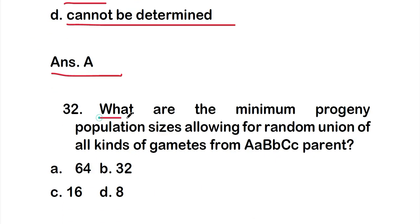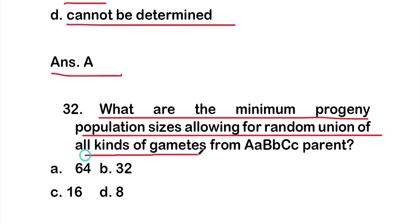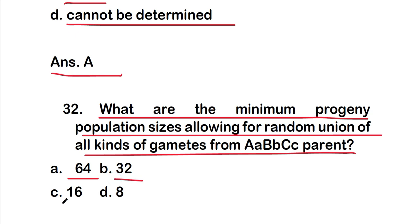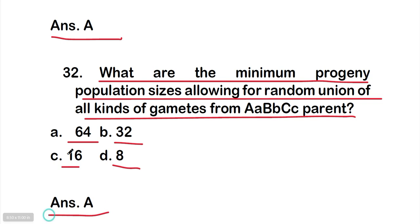Question 32: What are the minimum progeny population sizes allowing for random union of all kinds of gametes from an AaBbCc parent? Options are 64, 32, 16, or 8. The right answer is option A — 64.